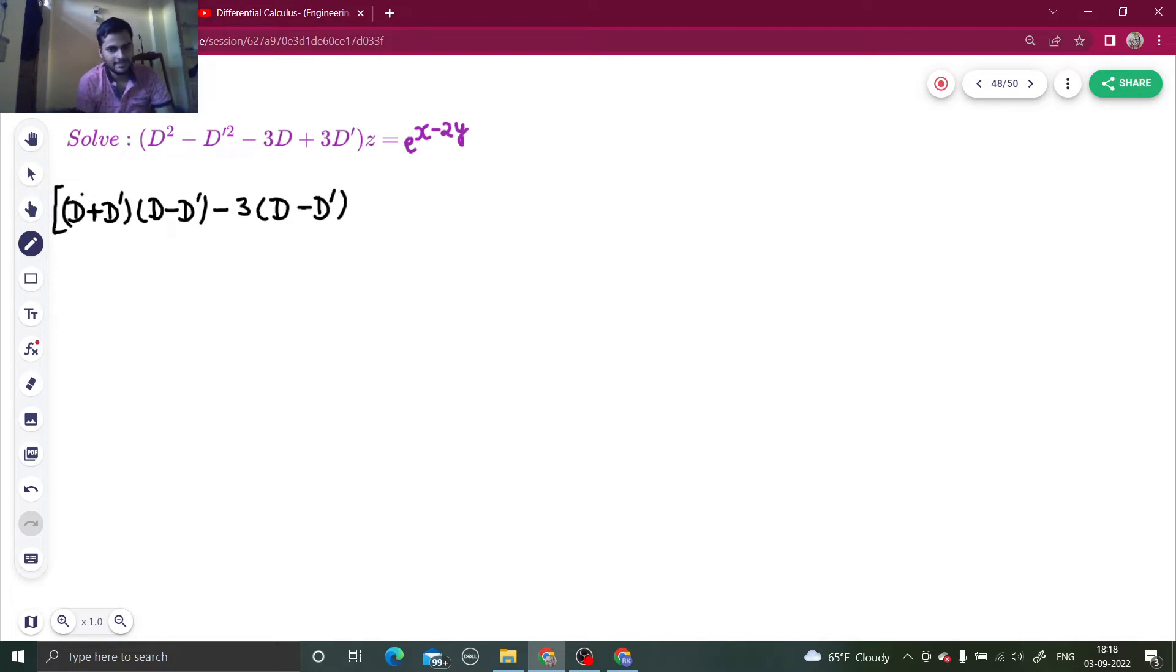I will be left with d minus d dash. And we have z equals to e power x minus 2y. If I take d minus d dash, I will get d plus d dash minus 3, z equals to e power x minus 2y.